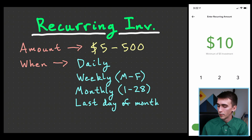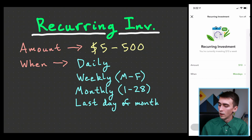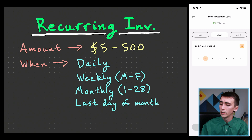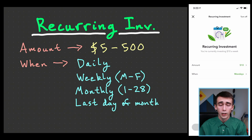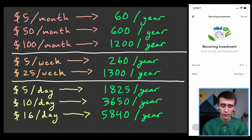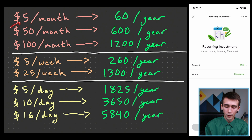You can type in your amount — say $25 — and choose your schedule. I personally have mine set to Mondays. The absolute minimum is $5 a month, which comes out to about $60 a year. $50 a month gives you $600 a year, and $100 a month is $1,200 a year.